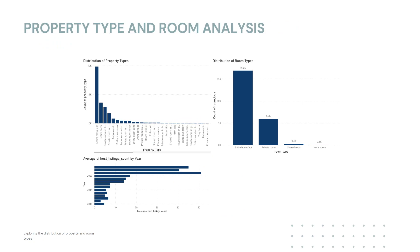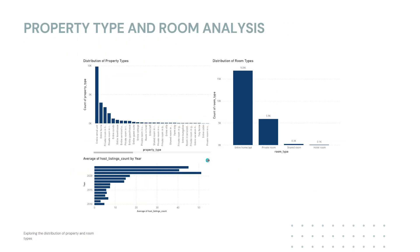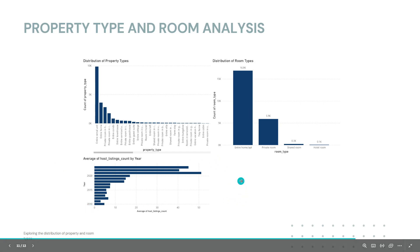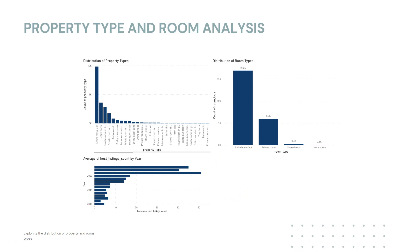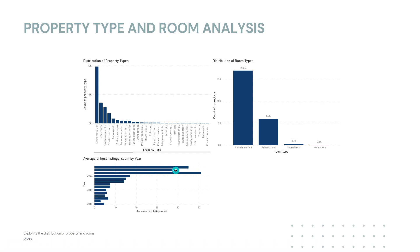In property type and room analysis, we explore the distribution of property and room types. Both suggest that entire rental units, entire home/apartments, or private rooms fetch the most amount of money, as shown by this chart right here. There is also a plot showing the average count of host listings by year, and we can see an increasing trend from 2010 to 2020, and then it starts to fall off again, possibly due to the pandemic.